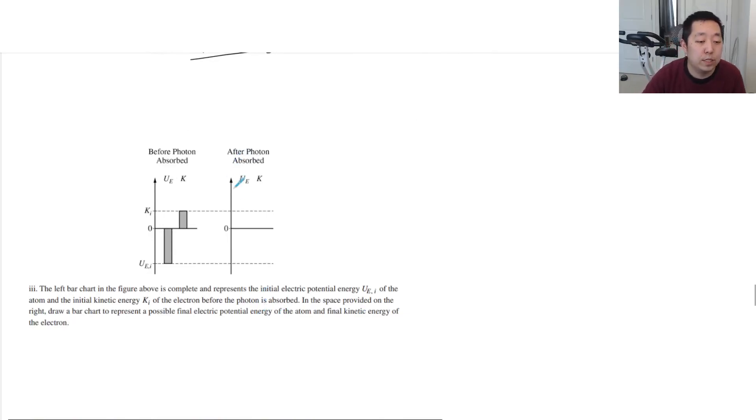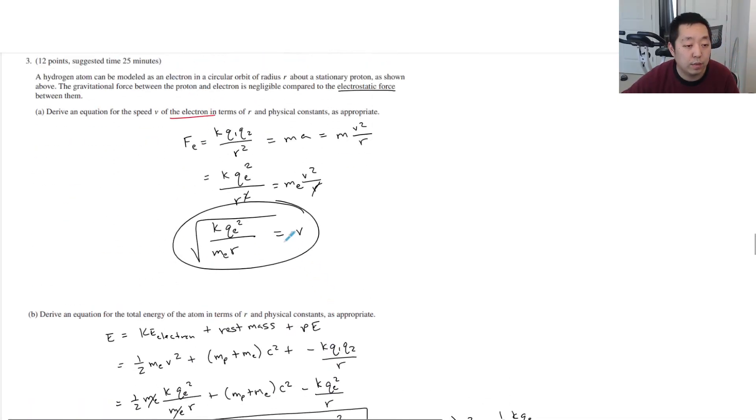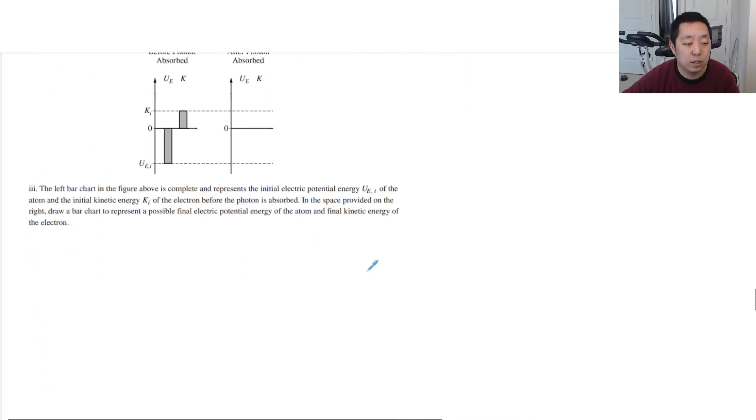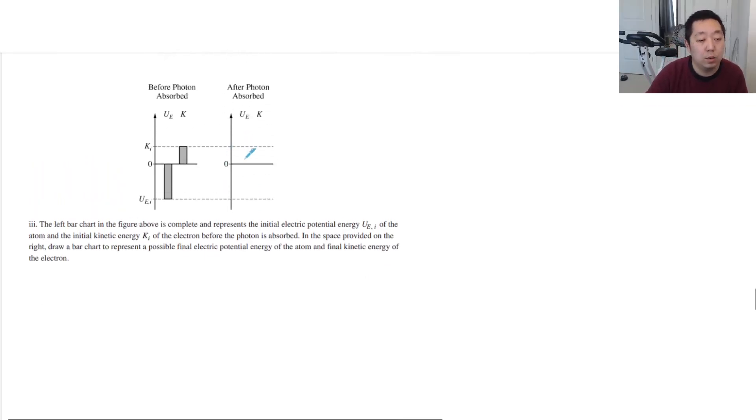Left bar of the chart is complete and represents the initial electric potential. So I feel like I did the electric potential correctly. I got a negative number here. In the space provided on the right, draw a bar to represent the possible final electric potential energy of the atom and final kinetic energy of the electron. So we've absorbed the photon. It's not going to move as fast. If you look at our speed equation, if you increase the R, the V goes down. That means we're going to lose kinetic energy because it's going to go to higher orbit. We've absorbed the photon, so we're definitely going to lose the kinetic energy.